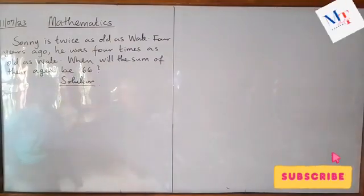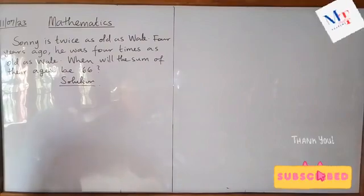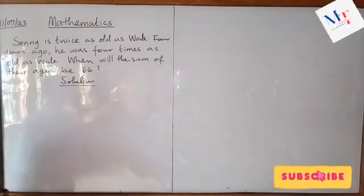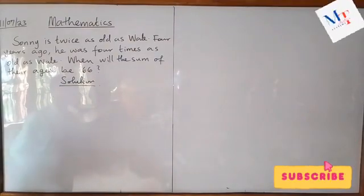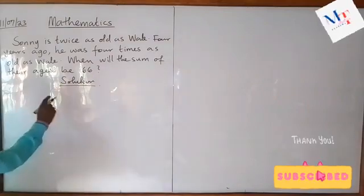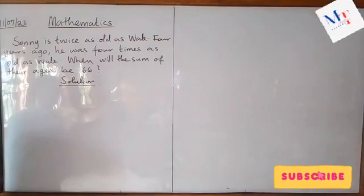Sonny is twice as old as Wally — that is the first statement. Four years ago, he was four times as old as Wally — that is another statement. When will the sum of their ages be 66? We take each statement one by one and interpret it.